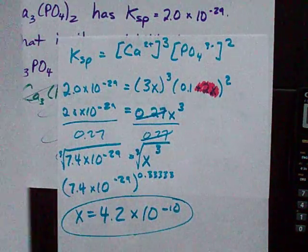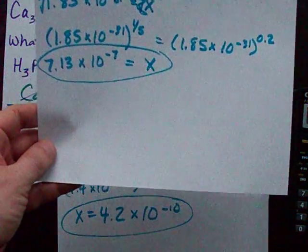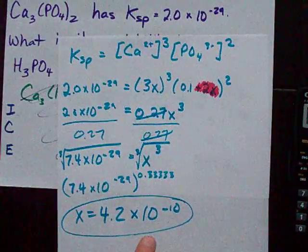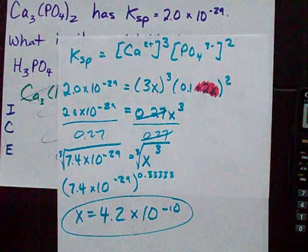I got a text message. Looks like someone's got a date tonight. 7.13 times 10 to the minus 7 is what dissolves in pure water, much less than that if we already had some phosphate in solution.